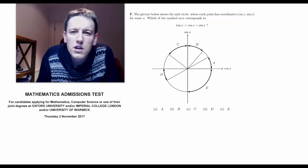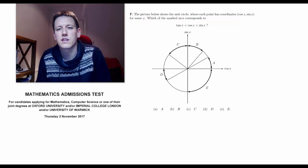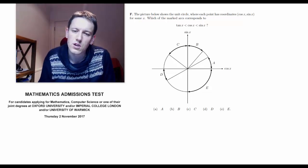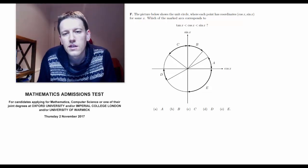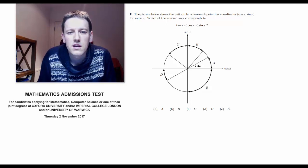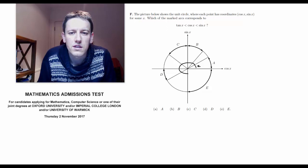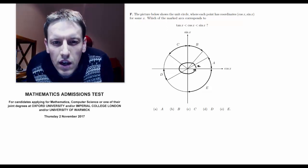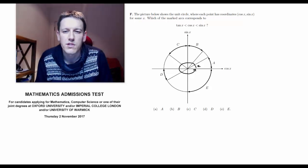And it says, which of the marked arcs corresponds to tan x is less than cos x is less than sin x? So we're thinking of x here being the angle measured from this axis, going around in this direction here from 0 to 2π radians or to 360 degrees.